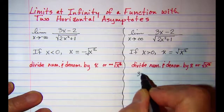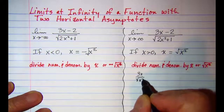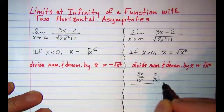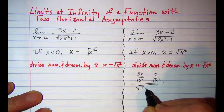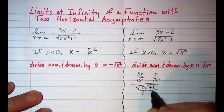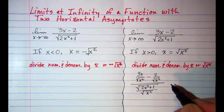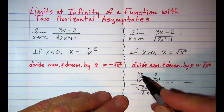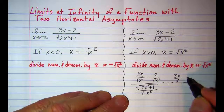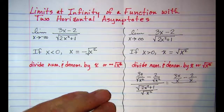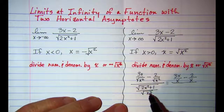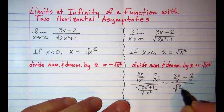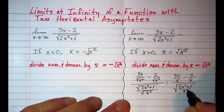We have 3x over square root of x² minus 2 over square root of x², and that's over the square root of (2x² + 1) divided by square root of x². Using this substitution to simplify, the first term becomes 3x over x minus 2 over x. In the bottom, I'm going to combine the two separate radicals into one single radical, giving 2x² + 1 over x².